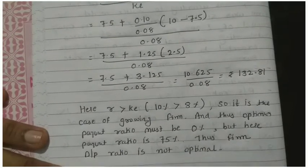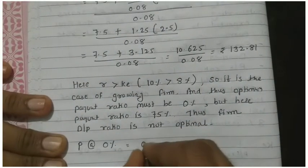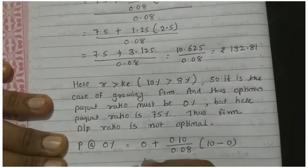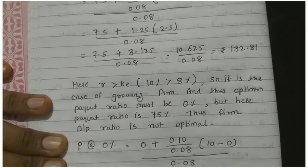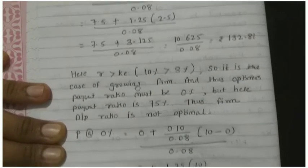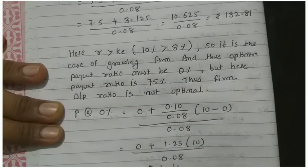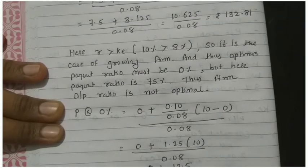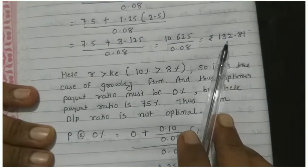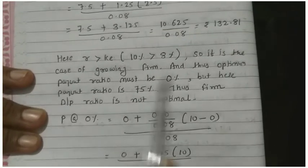To prove it, what we'll do is calculate at 0%. Price at the rate of 0%, now if we put the formula: 0 plus 1.25 into 12.5 divided by 0.08, the answer is 156.25. Now you see, at 75% price is 132.81, but at 0% it's 156.25, so the firm D/P ratio is not optimal.